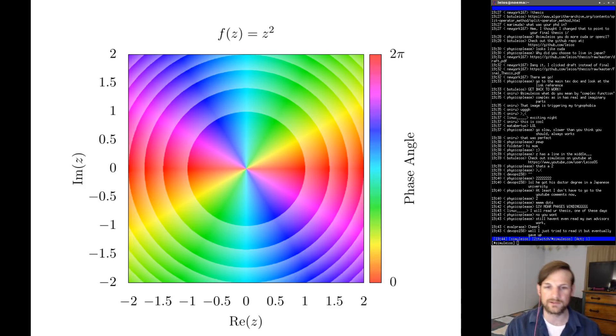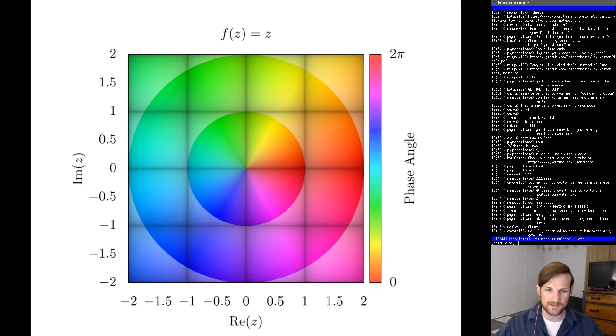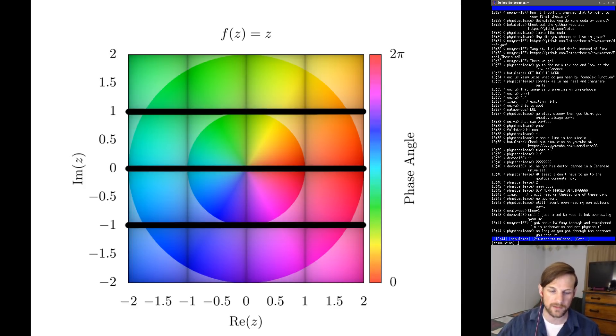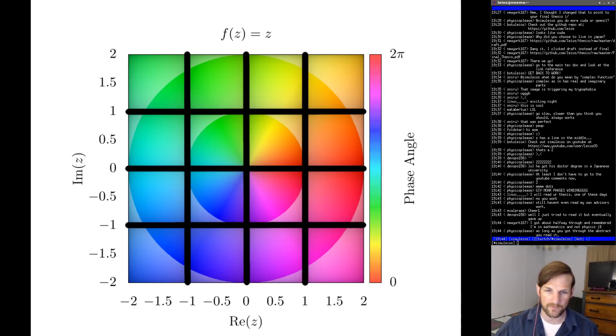Now there's one more thing people typically do with domain coloring and that is to show the integer values of the output function. So let's go back to the function we were looking at before f(z) = z. In this case we get some sort of black grid on top of our domain colored image. And each of these lines correspond to some integer value of the output in either imaginary space for the horizontal lines or real space for the vertical lines here.